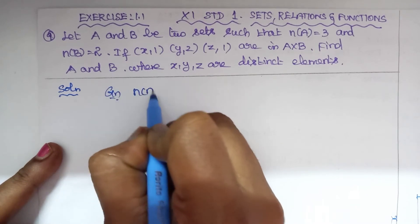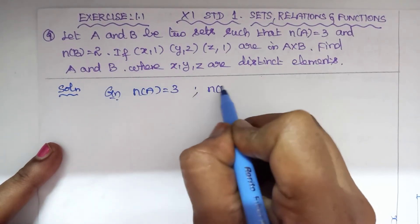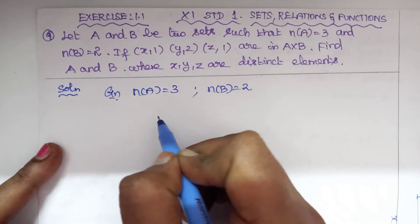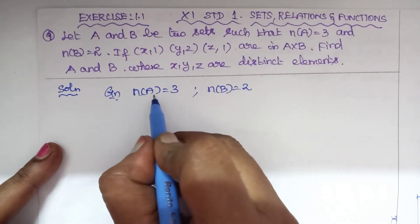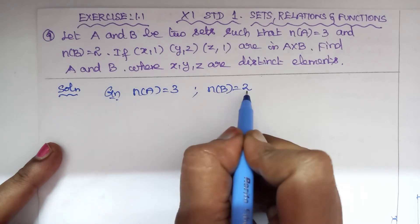Given: n(A) equals 3 and n(B) equals 2. Number of elements in the set A - set A has 3 elements, set B has 2 elements.